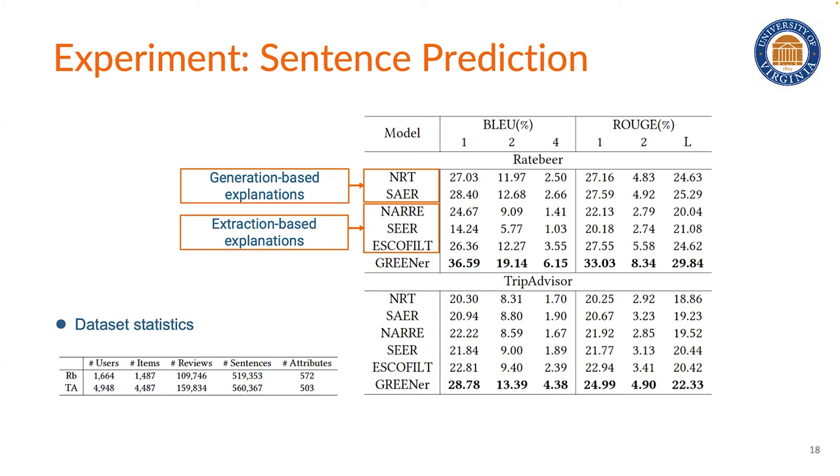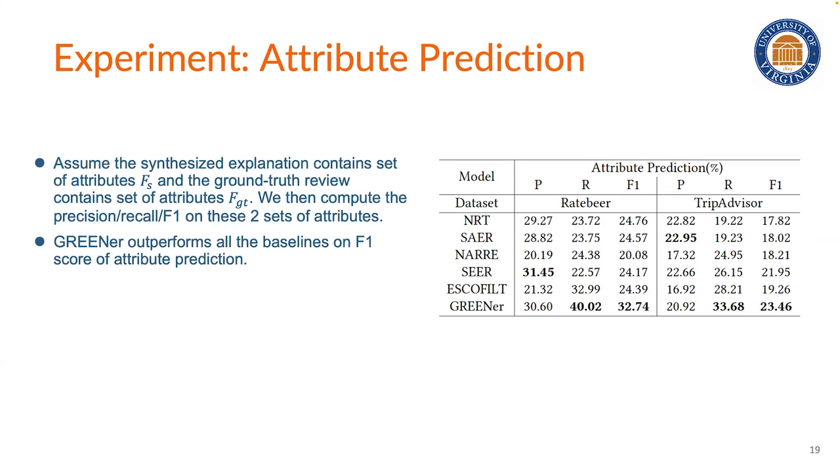We also measure the quality of the attribute prediction in the generated explanations. Results show that our method outperforms all the baselines on recall and F-score. This indicates that our method can indeed output explanations with not only precise attributes but also distinct attributes.